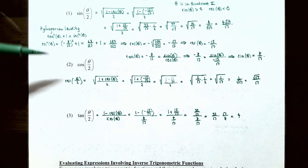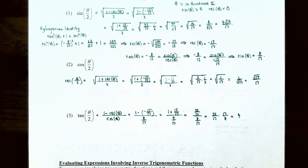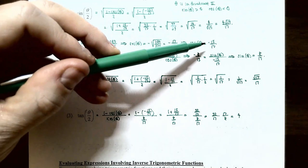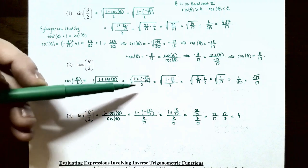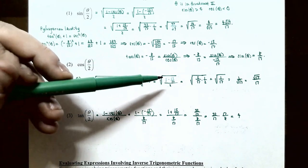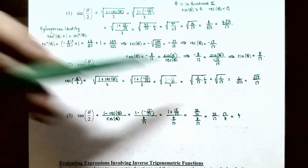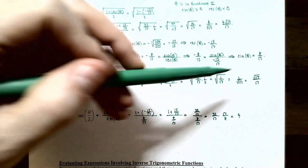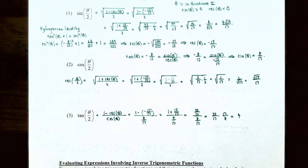Number 2: find cos(θ/2). Since θ/2 is in quadrant 1, cos(θ/2) is positive. So cos(θ/2) = +√[(1 + cos θ) / 2] = √[(1 + (−15/17)) / 2] = √[(1 − 15/17) / 2]. Simplifying: (17/17 − 15/17) = 2/17, divided by 2 gives 1/17 inside the square root. So √(1/17) = 1/√17 = √17/17.